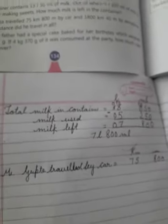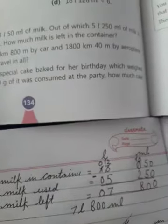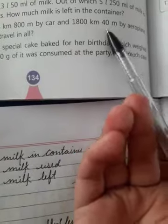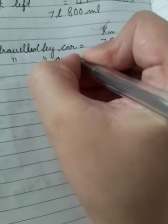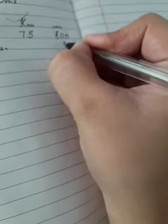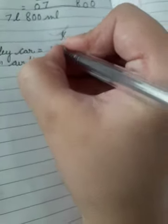First we'll mention the metric units, kilometer and meter. Mr. Gupta travel by car 75 kilometer and 800 meters. By aeroplane he traveled 1800 kilometer and 40 meter. We write from behind, from right hand side. Put zero here, 1800 kilometers. Here space remains, put zero. We need to add, so we write Mr. Gupta travel all, or you can write total distance he travel.